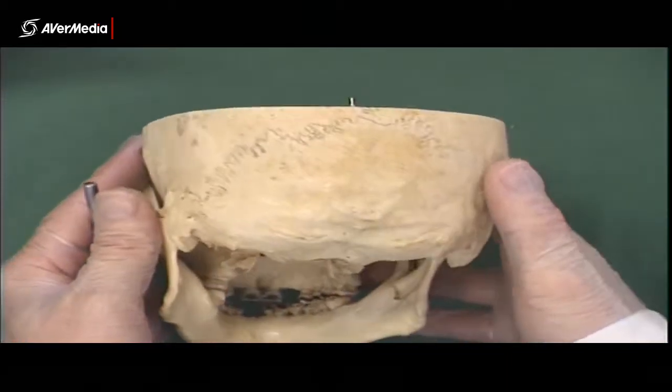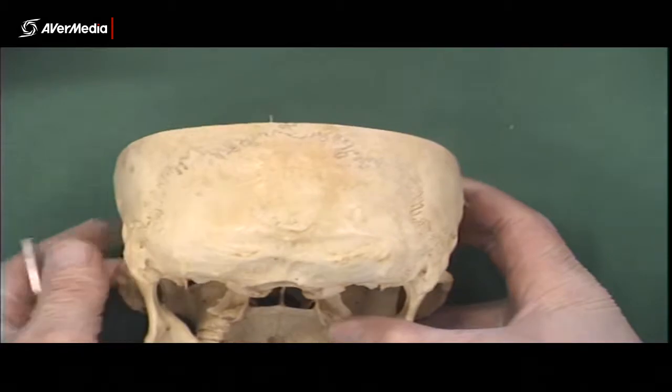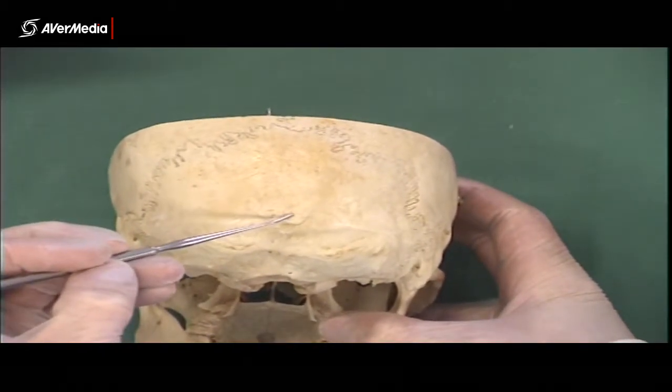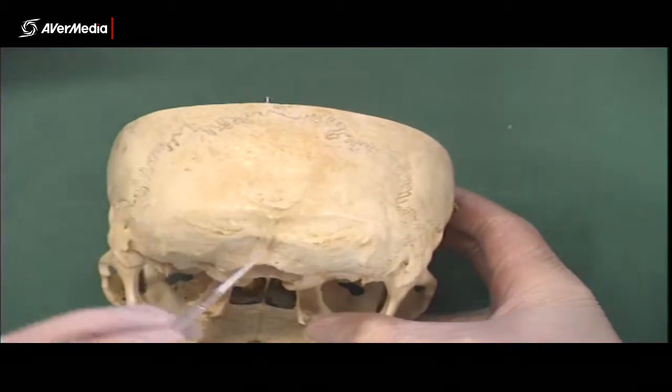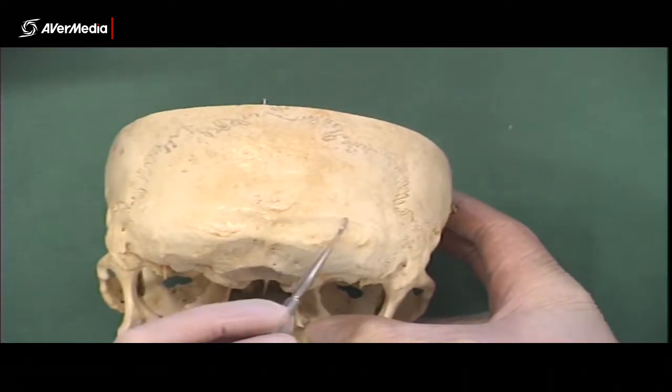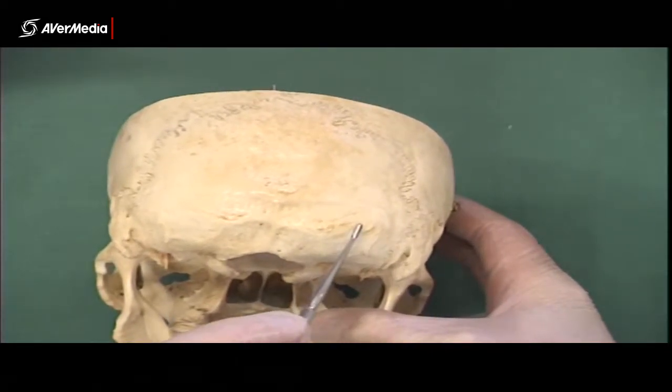So now we're looking at a posterior view of a real skull. We can see the external occipital protuberance here, lateral and inferior to it.